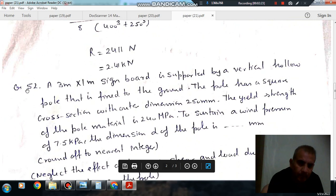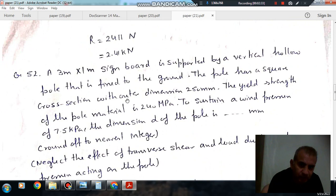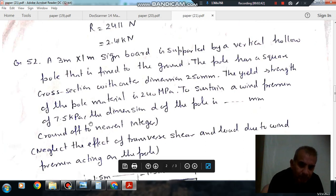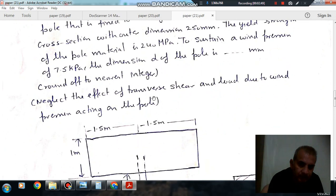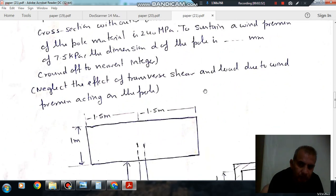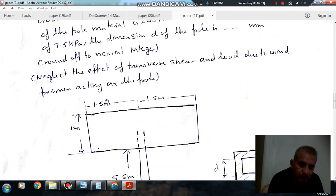Next, a 3m x 1m signboard is supported by a vertical hollow pole that is fixed to the ground. The pole has a square cross section with outer dimension 250 mm. The yield strength of the pole material is 240 MPa. To sustain a wind pressure of 7.5 kPa, the dimension D of the pole is dash mm, round off to two decimal places. Neglect the effect of transverse shear and load due to wind pressure acting on the pole.